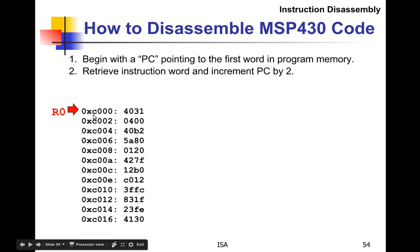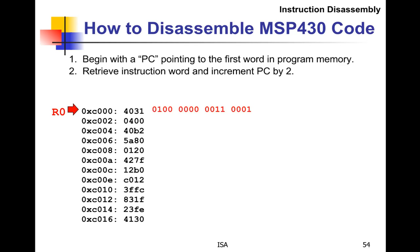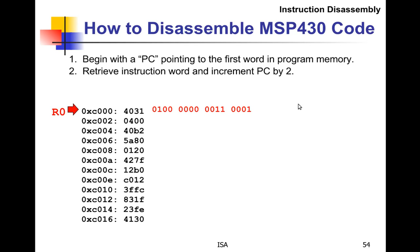We begin with the PC pointing to the first word in program memory. We retrieve the instruction word and increment the PC by 2. So we retrieve the first instruction word — the first two nibbles are 40 and the second two nibbles are 31. We write it in binary because it's easier to decode in binary, and then we advance the program counter by 2.